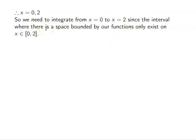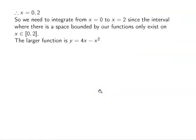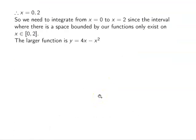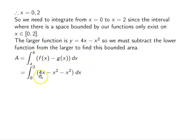From zero to two is where the bounded region exists. The larger function is 4x − x², which is on top (concave down), and x² is on the bottom. So my integral is the integral from 0 to 2 of (4x − x²) minus x² dx. Combining gives 4x − 2x², and factoring out −2 leaves −2(x² − 2x).